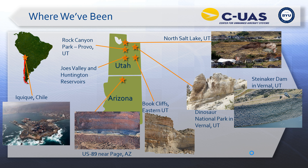Here are a couple of other places we've been. Rock Canyon Park in Provo is close to the university, so we use that as a test site for many of our algorithms. We also worked at North Salt Lake, where there was a landslide with slope failure that damaged a house and a building. Also Dinosaur National Park outside of Vernal, Utah, and Steinecker Dam, where there's some slope failure they wanted to monitor. Book Cliffs as mentioned, US-89 near Page, Arizona, where slope failure damaged the highway, and Chile, which had a devastating earthquake with liquefaction where we were called to fly and monitor displacement. Also Joe's Valley and Huntington Reservoirs.